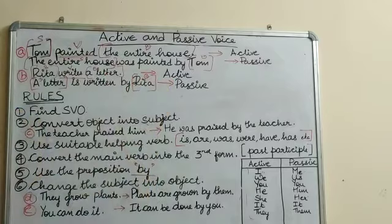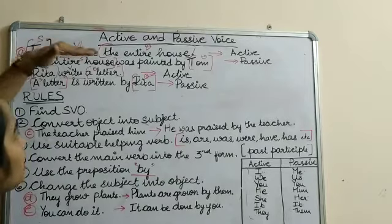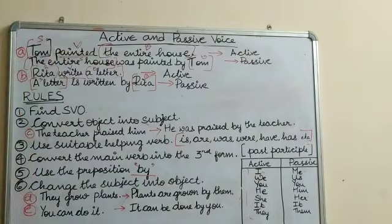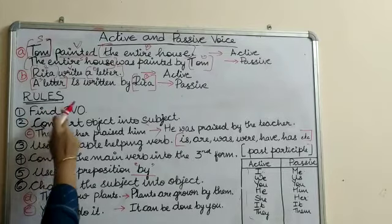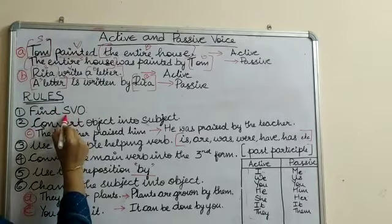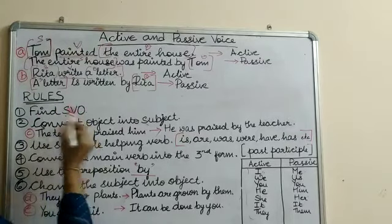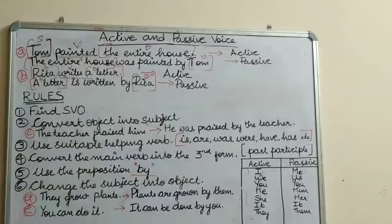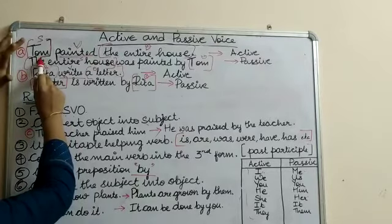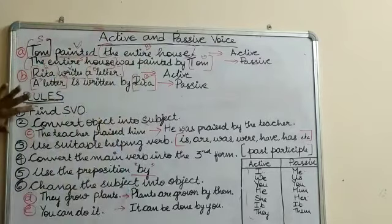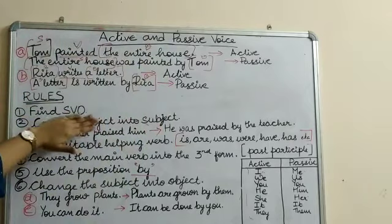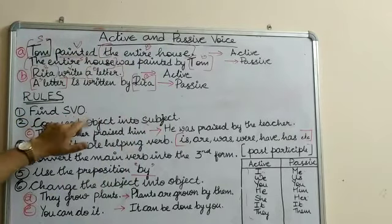Now there are six rules to keep in mind while converting a sentence from active to passive. The first rule is to find SVO — subject, verb, and object. When you have a sentence to convert to passive voice, the first step is to identify the subject, the verb, and the object.